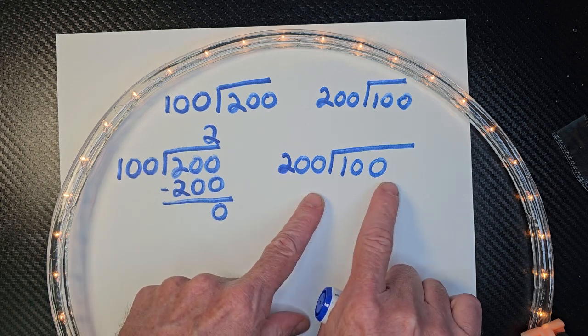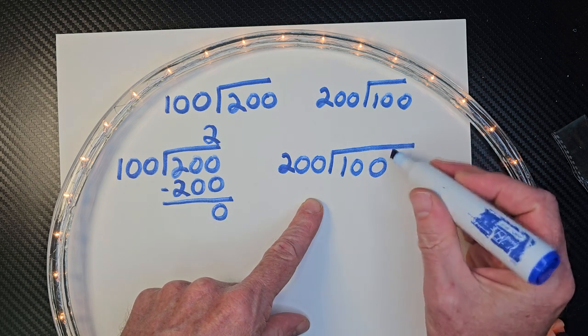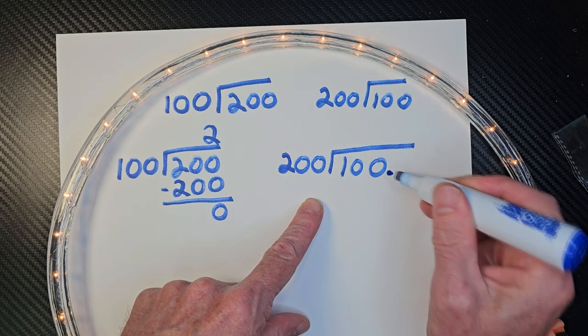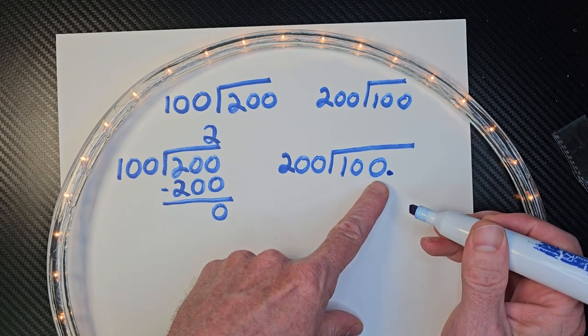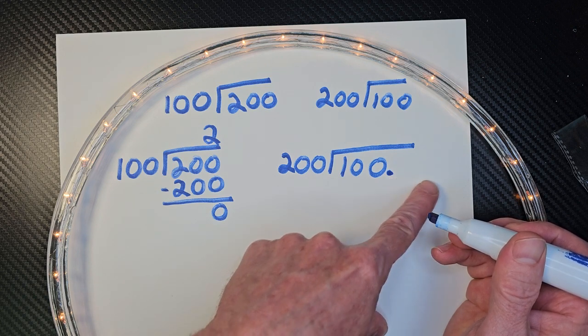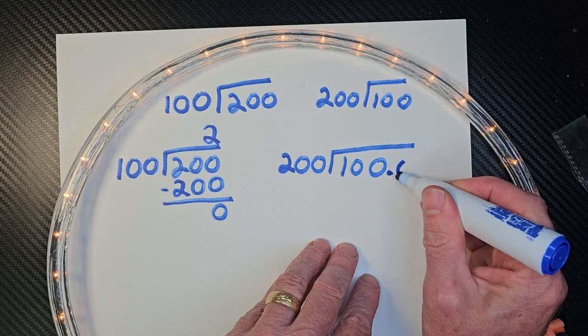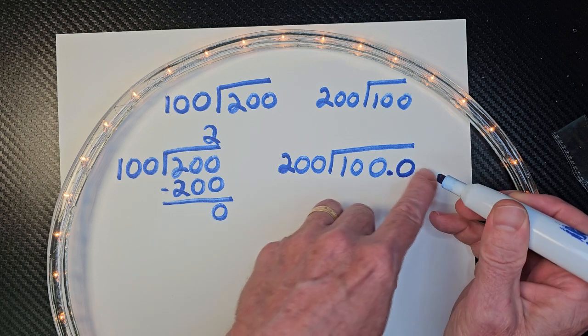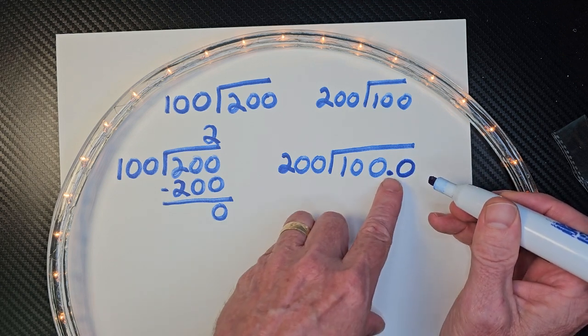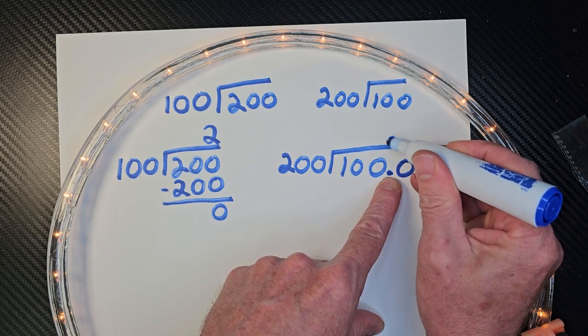I have to add a decimal point. All right, so I put a decimal point right here. And now anything on this side of the decimal point, I can put zeros back over here. Doesn't matter how many zeros. All right, but I got my decimal point right there. And I can put a zero over here. I could even put another one too. If I put a decimal point here, I need to put it up there in the answer.